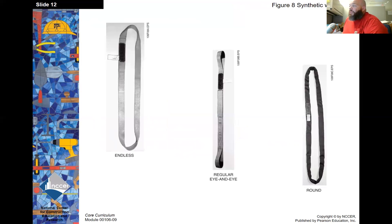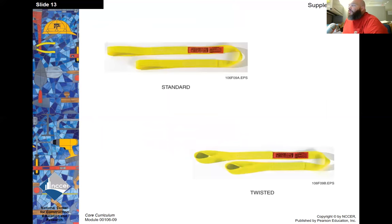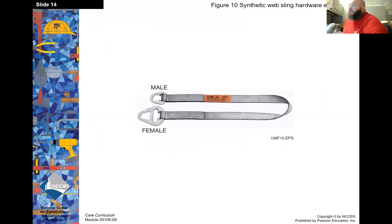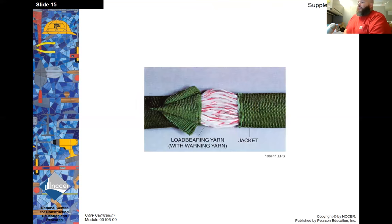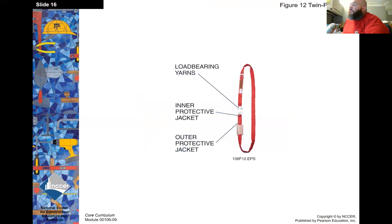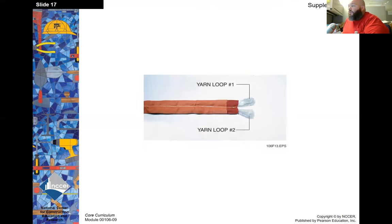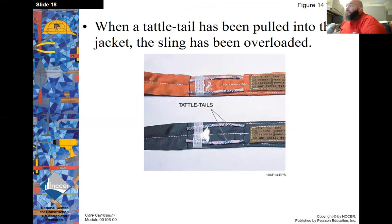There are a couple of different configurations of how the loops are set up on slings. Here's a synthetic sling with hardware or metal end fittings. Here's a sling that has been overloaded — you can see the load bearing yarn and the warning yarn inside. On a twin path sling, when a tattletale has been pulled into the jacket of the sling, it has been overloaded. Those two small strings won't be visible — they'll be pulled inside the covering — which means the sling is unsafe to use.